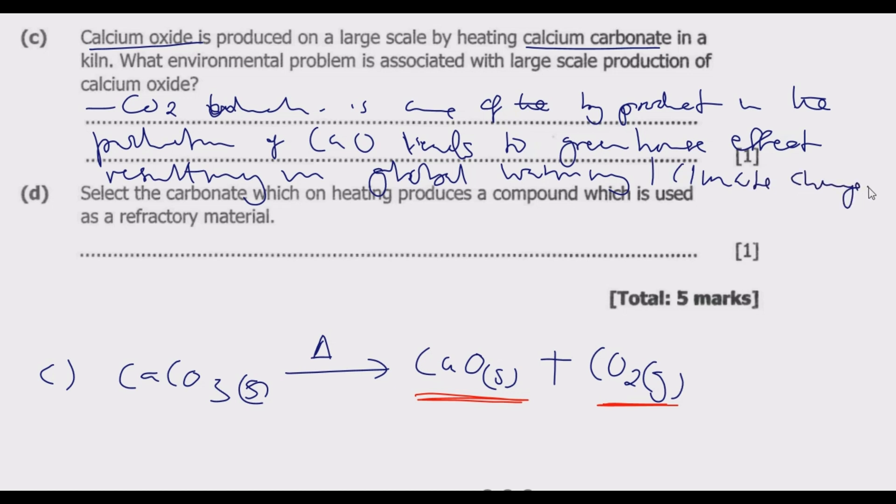If you are producing calcium oxide in large scale it implies that you're also producing carbon dioxide in large scale. This would imply that you are contributing more to greenhouse gases which are the key drivers of the greenhouse effect, which is a major driver of global warming.